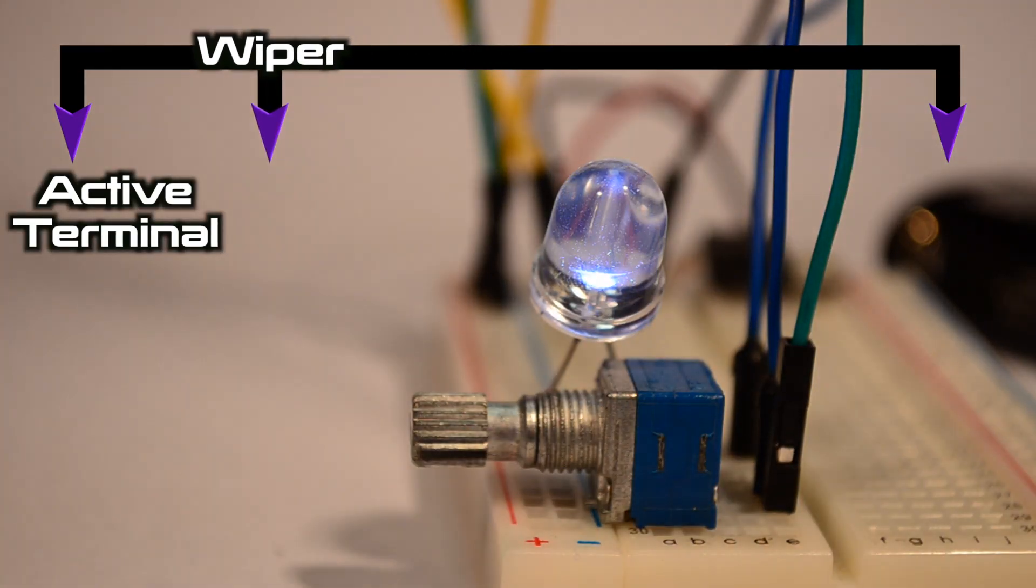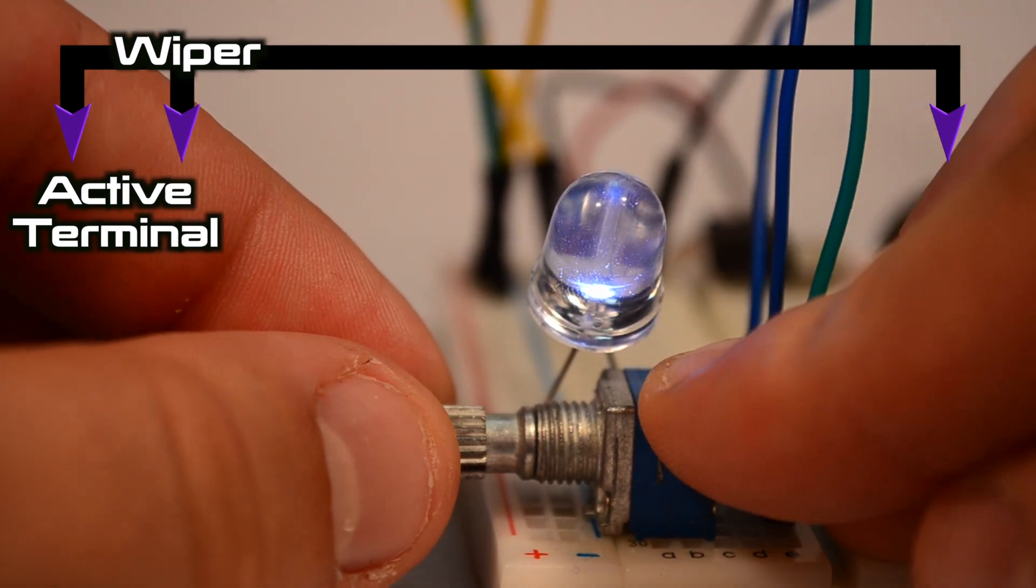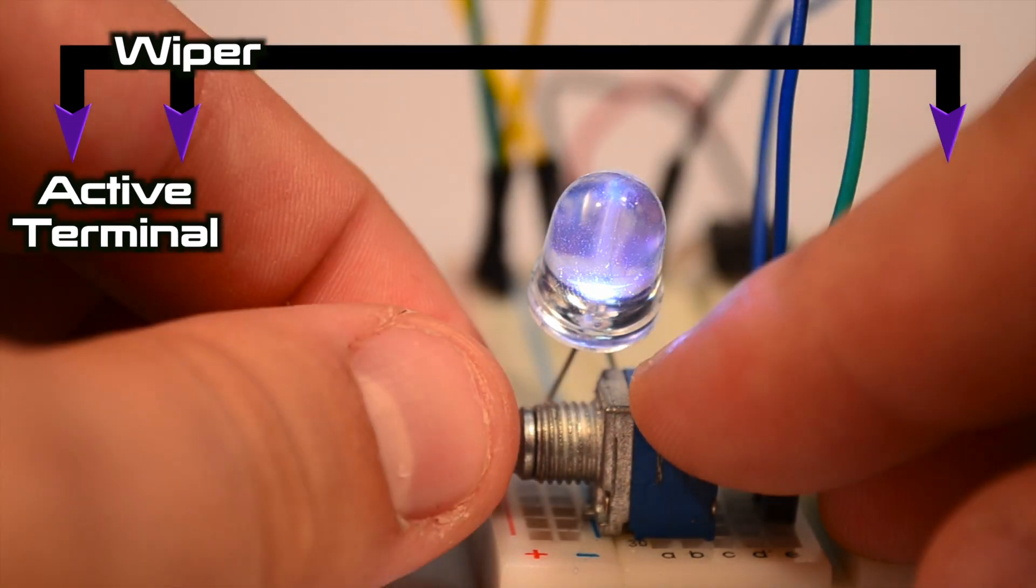As you can see, when we decrease the distance between the wiper and the terminal of the potentiometer, resistance also decreases and more current is allowed to flow to the LED.